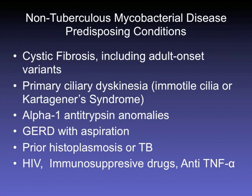Predisposing conditions for NTM disease include anyone with lung impairment: cystic fibrosis including adult-onset variants, Kartagener syndrome or immotile cilia syndrome, alpha-1 antitrypsin deficiency, GERD or aspiration, prior lung infections like TB or histoplasmosis, and established immunocompromised states like HIV, immunosuppressive drugs, or anti-TNF-alpha blockers. When we see a patient with NTM, we should ask about GERD and aspiration history, as those are risk factors.